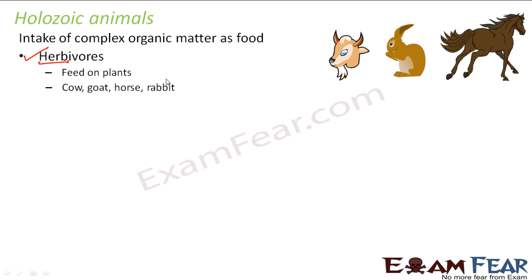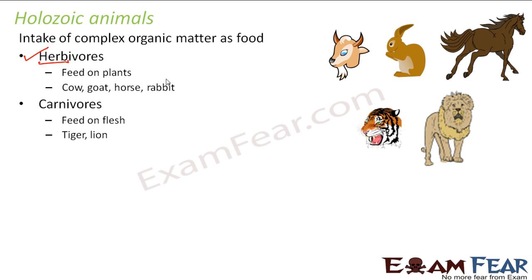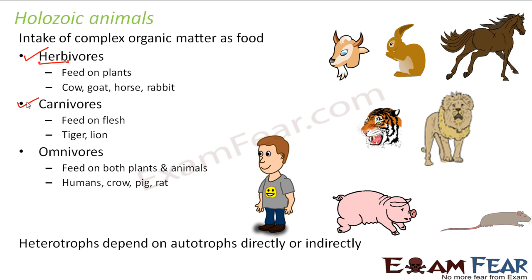The next category is carnivores – those which feed on flesh. Examples would be tiger and lion. Now there are also animals which feed on both plants as well as flesh. Human beings, for example – we feed on both flesh and plants. So they are known as omnivores, meaning they feed on both plants and animals. Examples: humans, crow, rat.